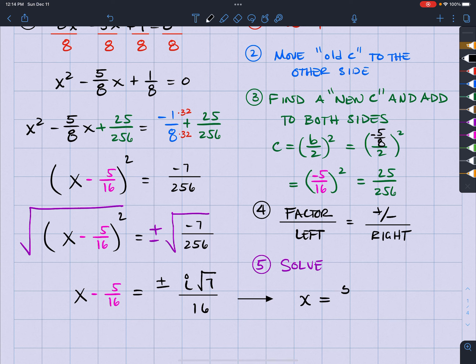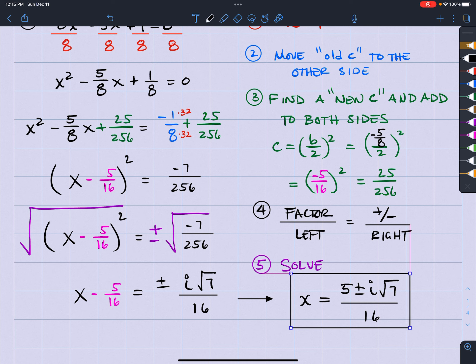plus or minus i square root of 7 all over 16. And that would be my answer since they both have the common denominator. I can actually combine them.